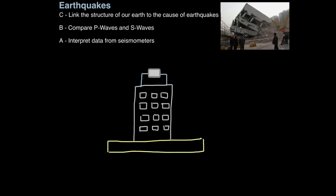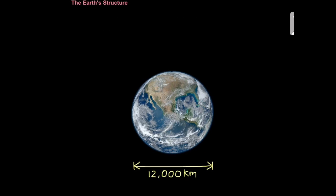But to understand earthquakes, we must first understand the structure of our earth. So here is our blue planet, the planet earth, and the earth has a diameter of around 12,000 kilometres.